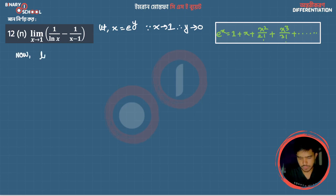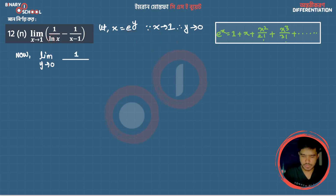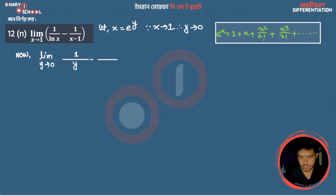Now I'm going to show you how as y tends to 0. We get 1 over ln(e to the power y) minus 1 over (e to the power y minus 1). Using the identity ln(e^p) = p, the first term becomes 1 over y, and we can write ln(e^y) minus 1.